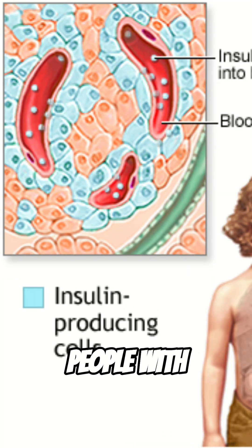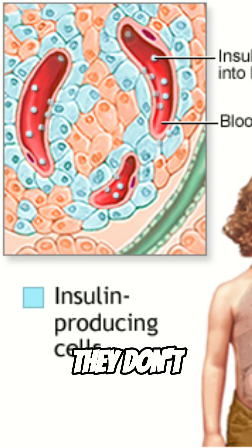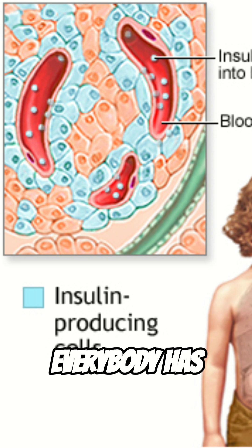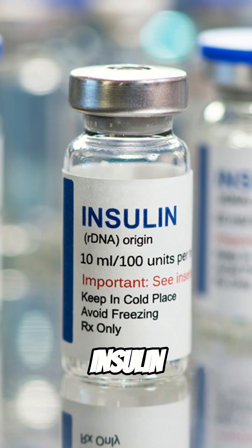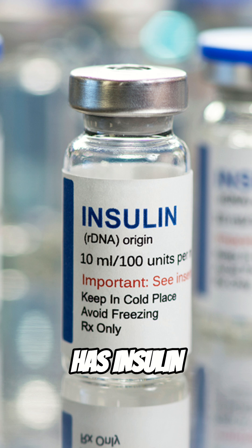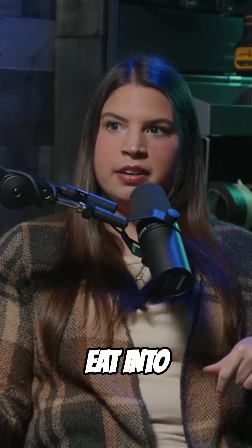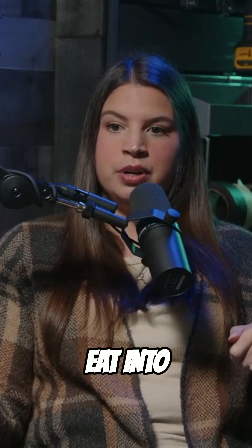People with type 1 don't have insulin — they don't make it. Everybody with a normal functioning body has insulin and uses that insulin to convert the food that we eat into energy.